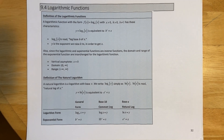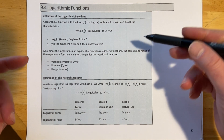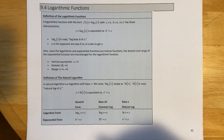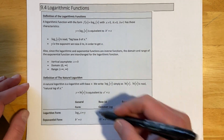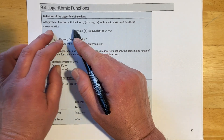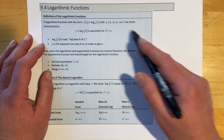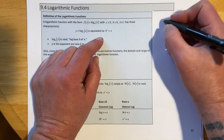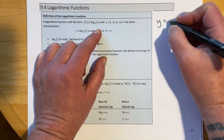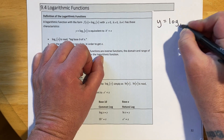This is Derek, section 9.4, logarithmic functions. I'm going to go through some definitions for the log function, some characteristics, and some notation as well. The log function has the form f(x) = log base b of x — I'm going to write it as y = log base b of x.